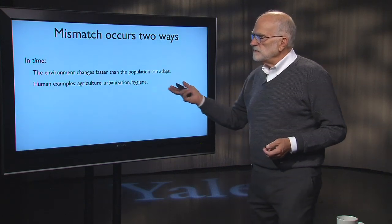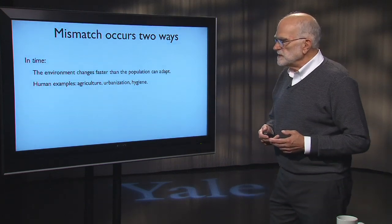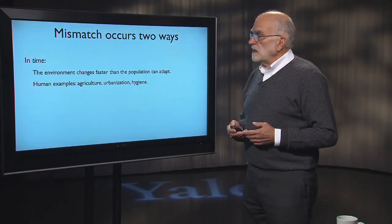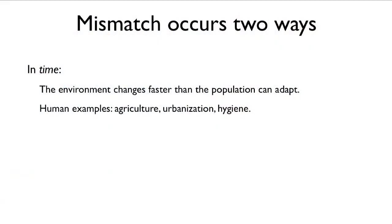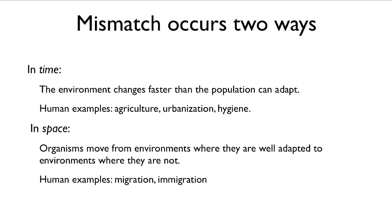In time, this happens when the environment is changing faster than the population can adapt. We have some important recent human examples: the agricultural revolution, urbanization, and hygiene have all resulted in maladaptations, either in diet or our microbiome, and that has resulted in medical conditions that are important in modern populations. In space, organisms can move from environments where they're well adapted to environments where they're not well adapted, and human examples have to do with migration and immigration.